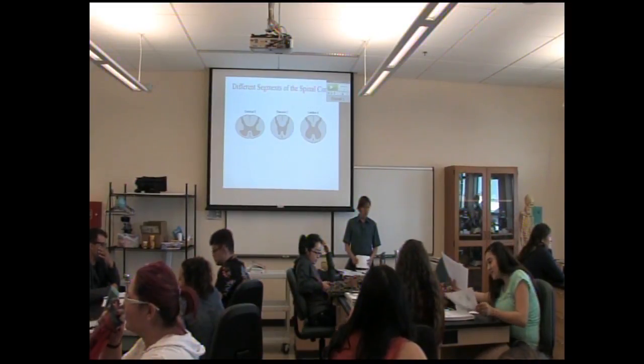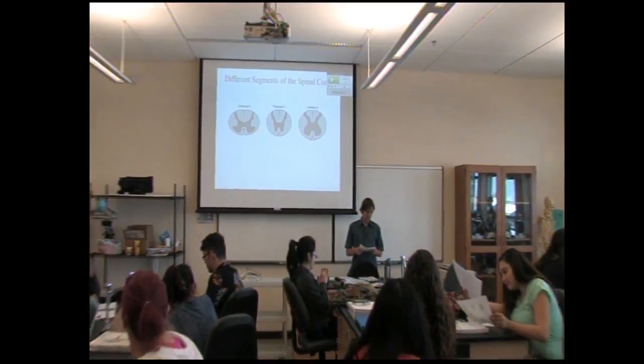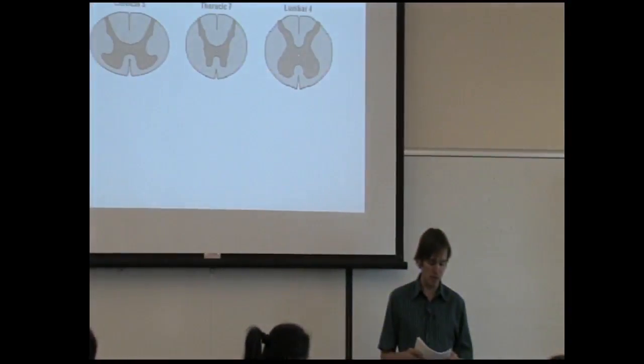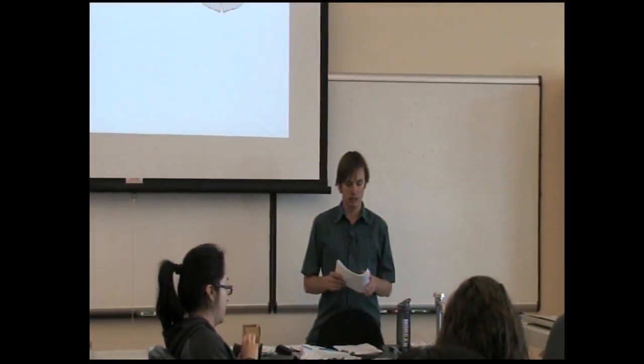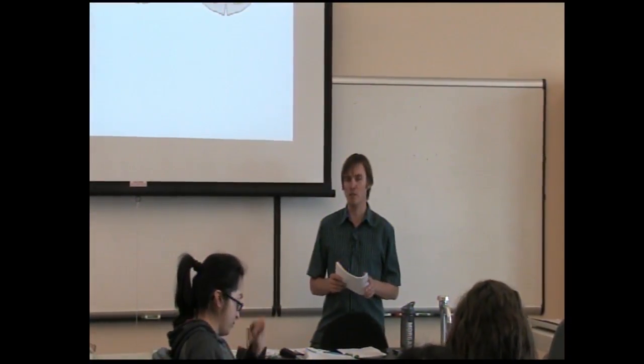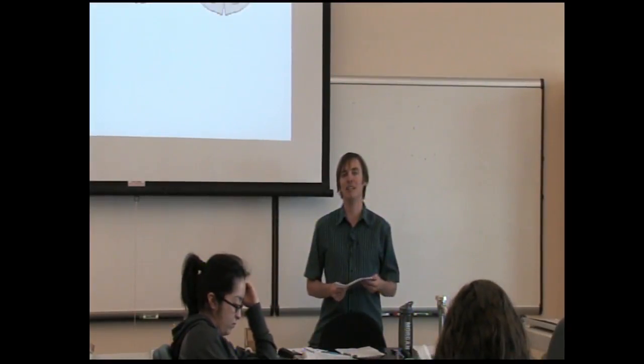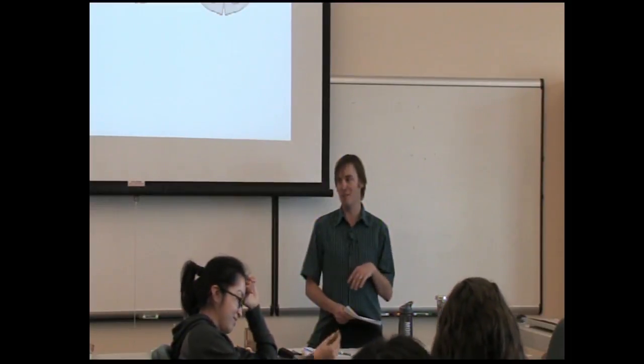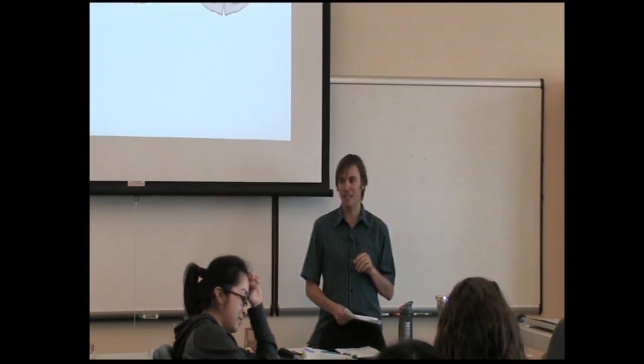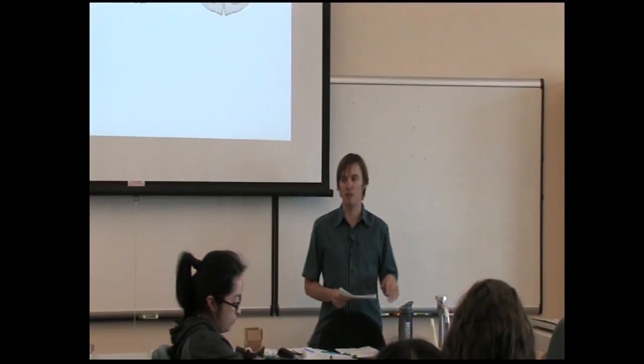So what is a nuclei? Is it a collection of axons, a collection of neuronal cell bodies, a type of neuron, or a type of glial cell? It is B, a collection of neuronal cell bodies. Throughout this chapter, they use a lot of vocabulary like nuclei and ganglion, so make sure you know what they're talking about.